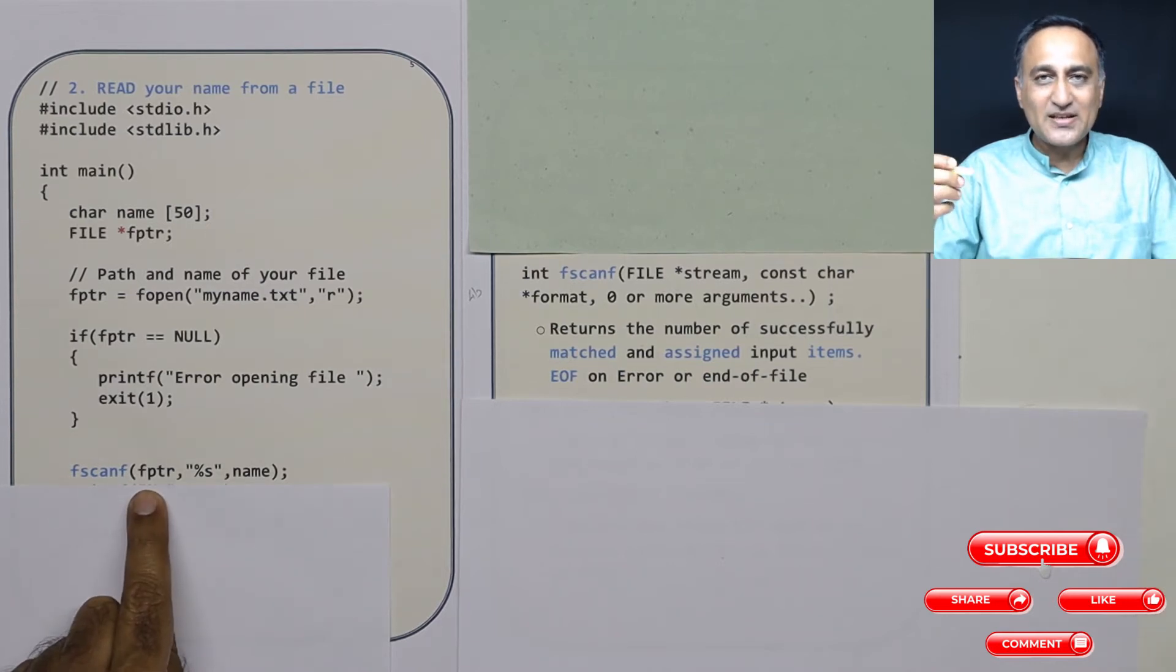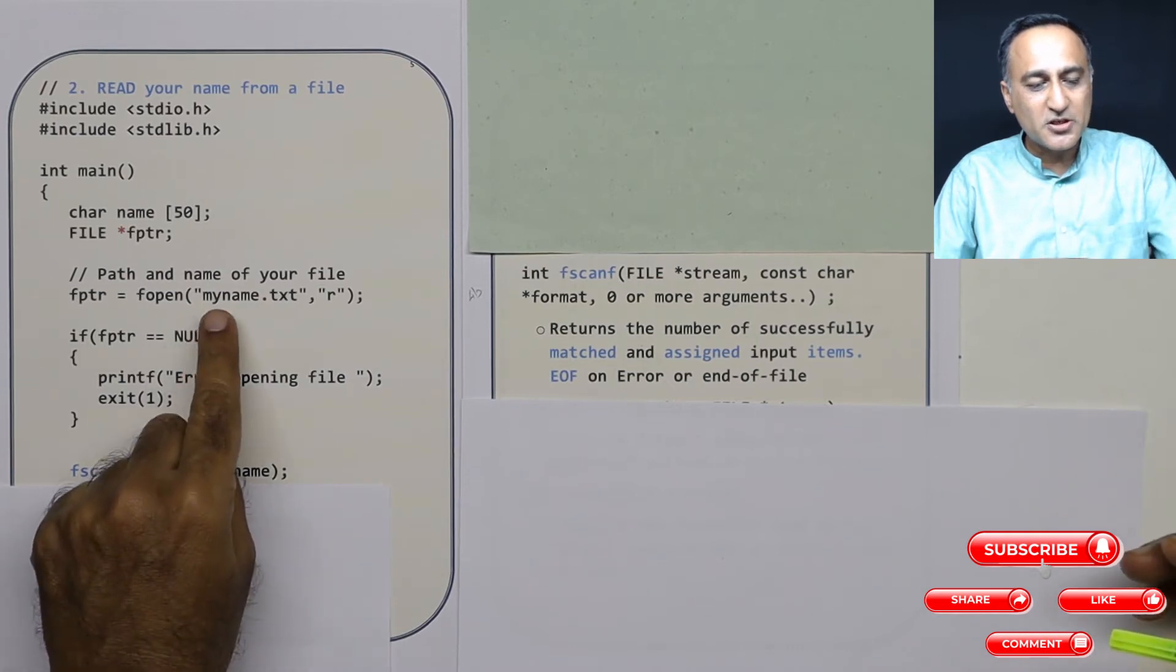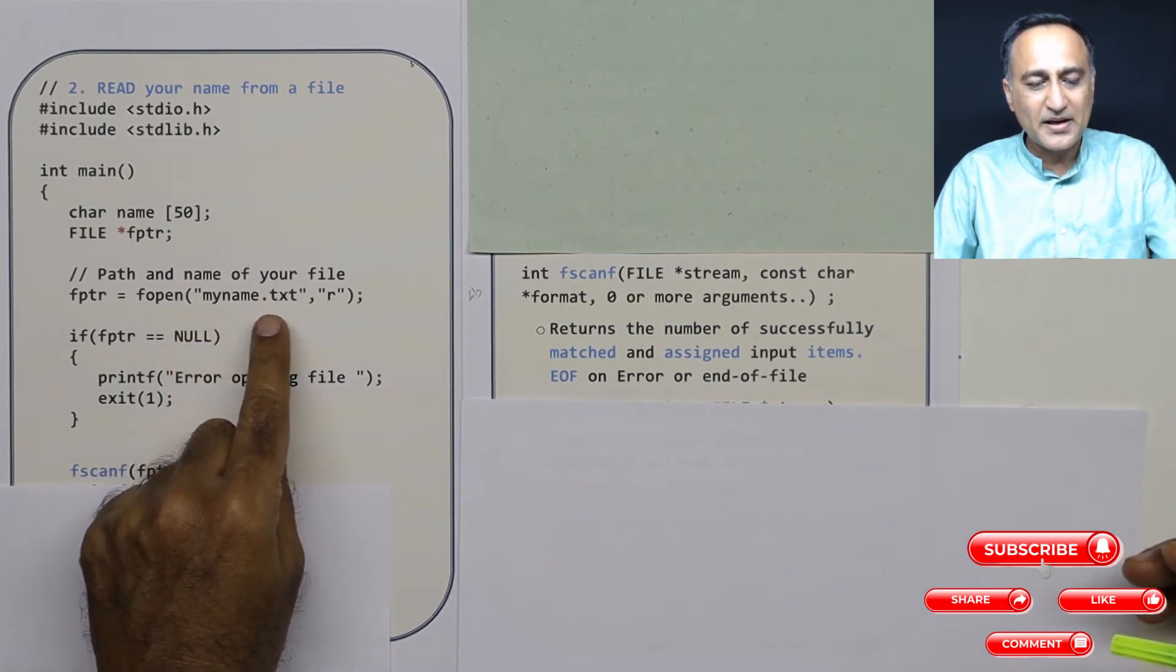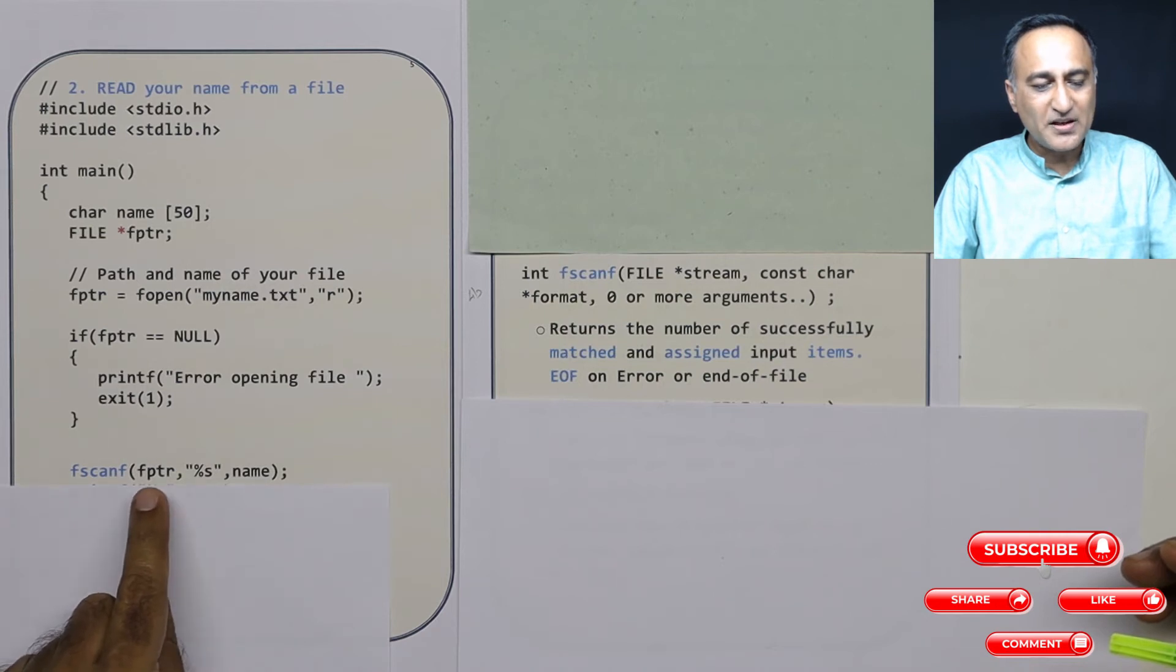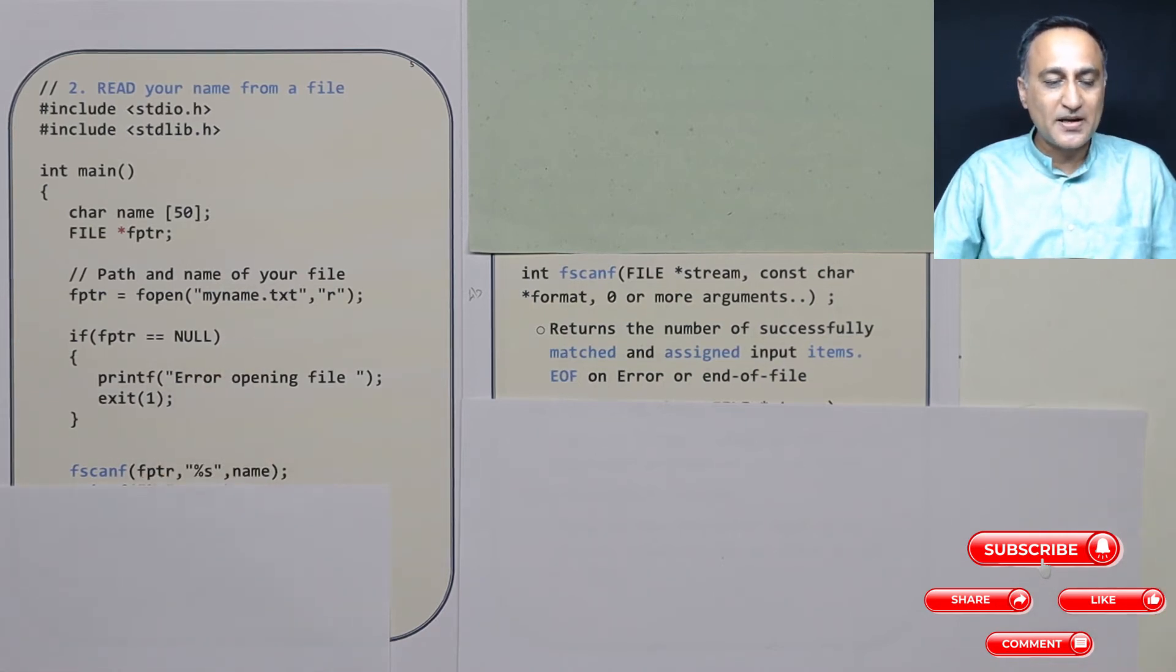fptr stands for the input stream. What is your input stream? Input stream happens to be your file on the disk whose name is myname.txt. So fptr represents your input stream which is myname.txt.